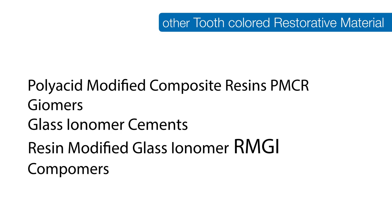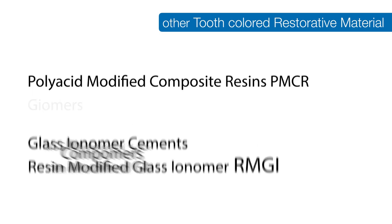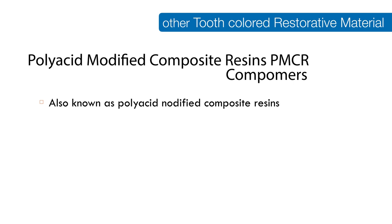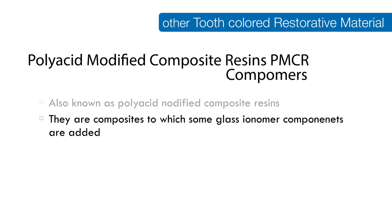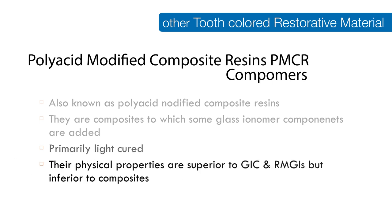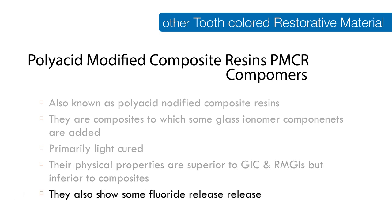Other tooth-colored restorative materials include polyacid-modified composite resins (compomers), giomers, glass ionomer cements, and resin-modified glass ionomer cements. Compomers are more closely related to composites — a mixture of glass ionomer cement and composite, but with properties more towards composites. They are primarily light-cured, with physical properties superior to glass ionomers and resin-modified glass ionomers, though slightly inferior to composites.